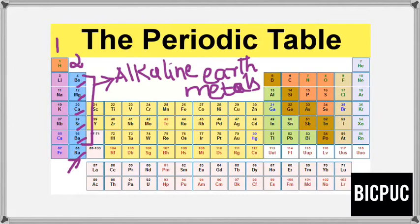Group 2 elements are called Alkaline Earth Metals because their oxides and hydroxides are alkaline in nature, and these metal oxides are found in the Earth's crust. Therefore, the name is Alkaline Earth Metals.